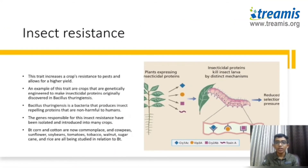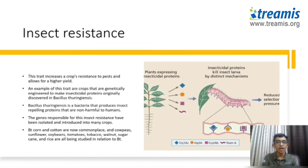What is insect resistance? This trait increases the crop's resistance to pests and allows for a higher yield. Bacillus thuringiensis is a type of bacteria that produces insect-repelling proteins that are non-harmful to humans. The genes responsible for this insect resistance have been isolated and introduced into many crops. Bt corn and Bt cotton are now commonplace, and soybeans, sunflowers, and others are all being studied in relation to Bt crops.